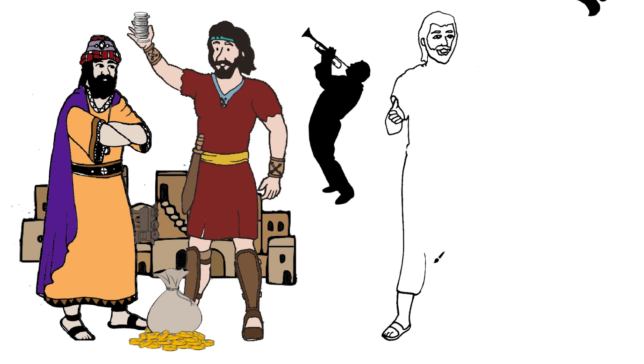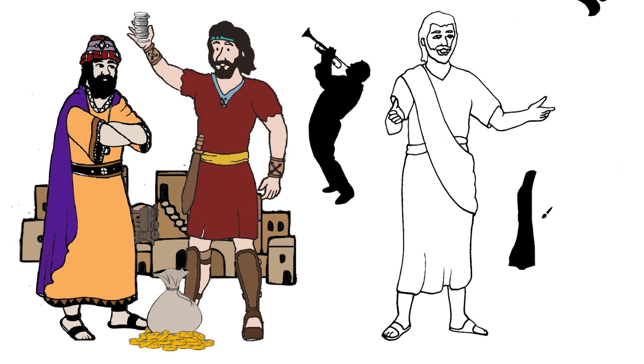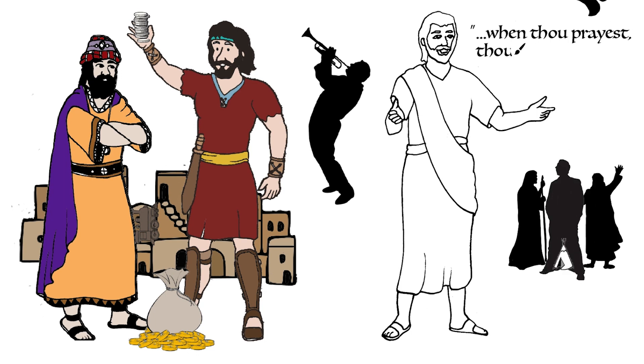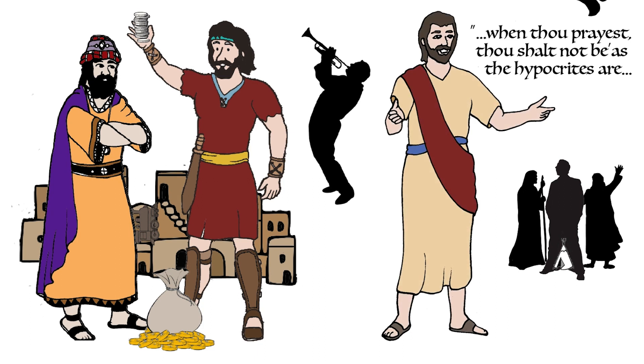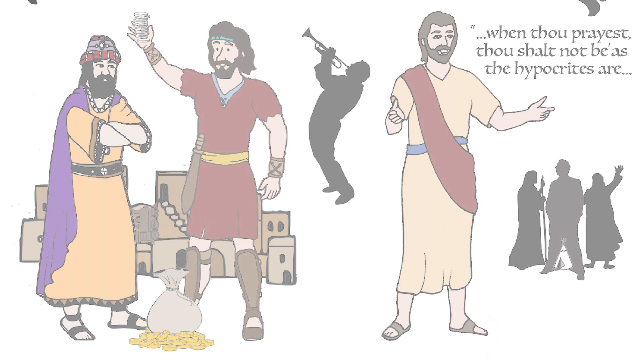Jesus said we should not pray like hypocrites, who love to have their reward of being seen of men while praying, standing in the synagogues and street corners. He said that we should enter our closets, shut the door, and pray in secret to our Father in heaven, who will then reward us openly.